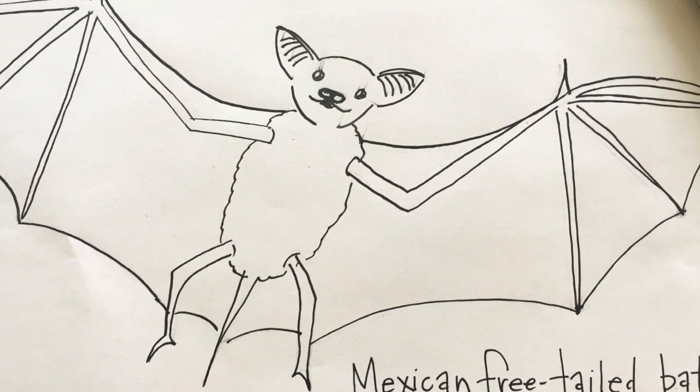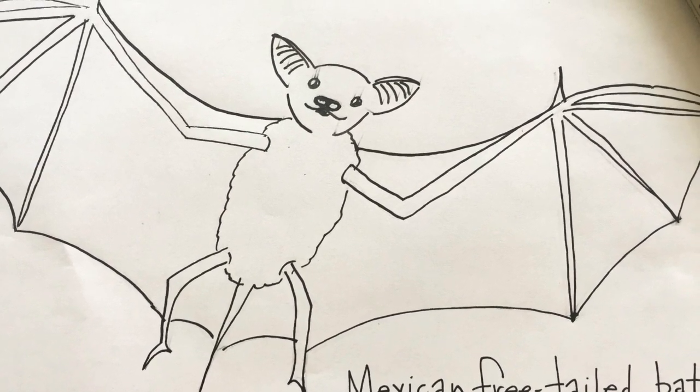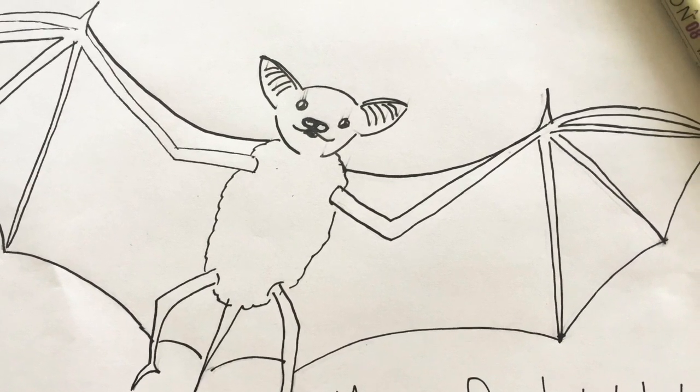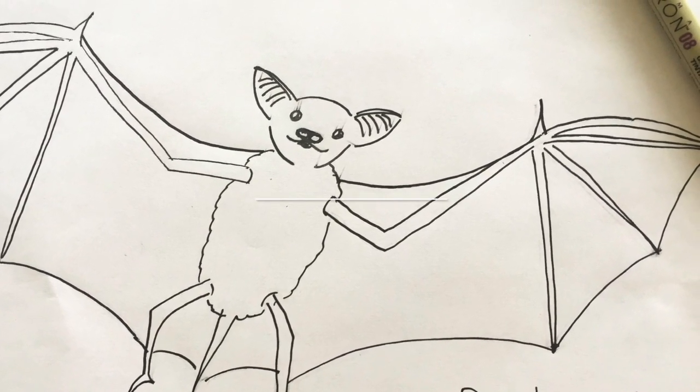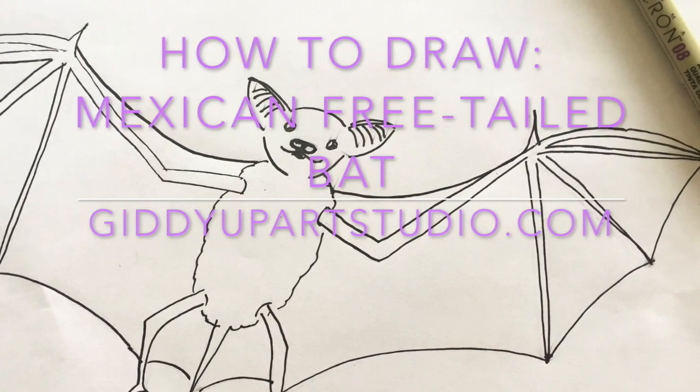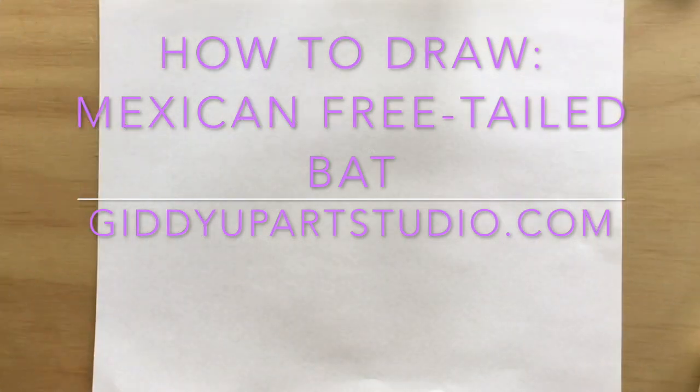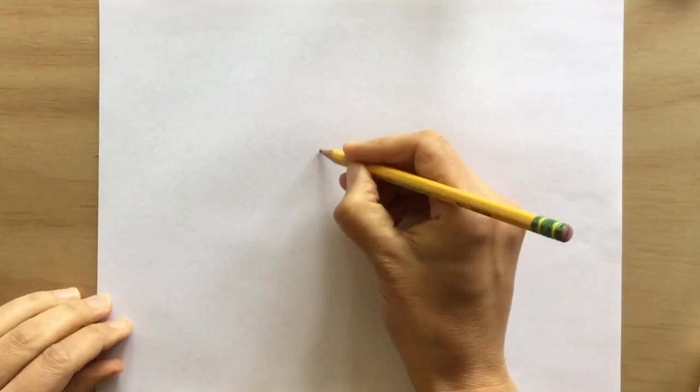Hey, it's Juliet with Giddy Up Art Studio. If you're visiting Austin, Texas in the spring or summer, you have to set aside some time at dusk to watch the Mexican free-tailed bats emerge from the A&W Richards Congress Avenue Bridge. It's amazing! Let's learn more about the bats by drawing them. Let's get started.